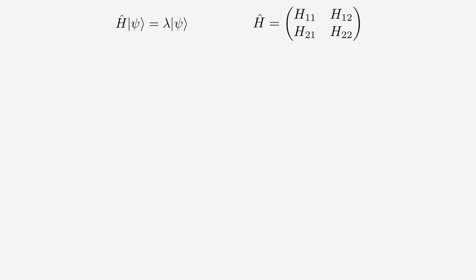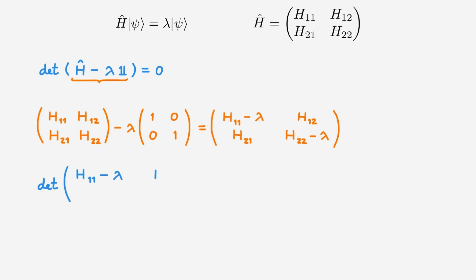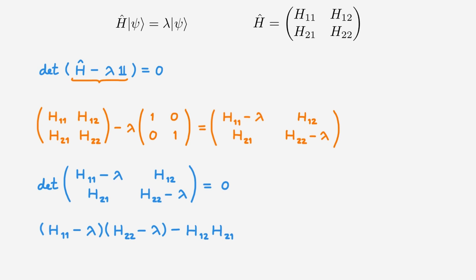Whenever we want to find the eigenvalues and eigenstates of an operator or matrix, we need to consider the corresponding characteristic equation, which in our case is given by the determinant of this expression, set to zero. If we consider the argument of the determinant, we can explicitly write out the Hamiltonian matrix minus lambda times the identity matrix. Evaluating this expression, we end up with h11 minus lambda, h12, h21, and h22 minus lambda. This means we need the determinant of this expression to be equal to zero. The determinant of a 2x2 matrix is simply the product of the diagonal terms minus the product of the off-diagonal terms, and we need to set this to zero.